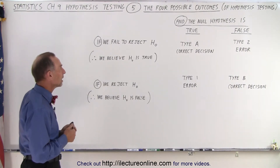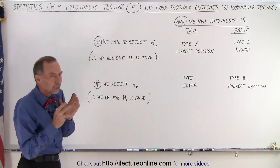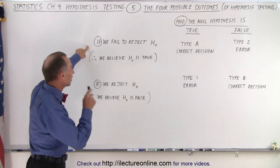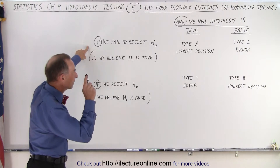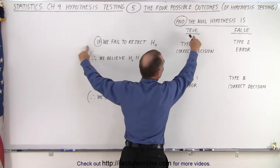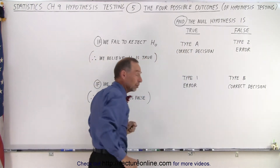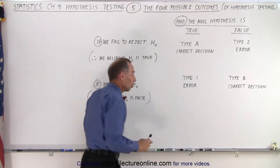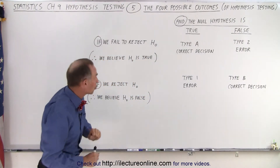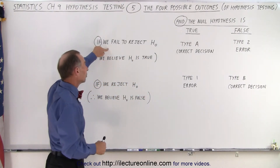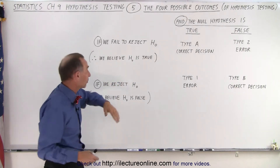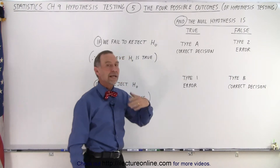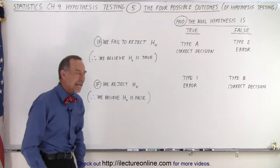But here we then tie that in with what's actually going on. If we fail to reject the null hypothesis, and the null hypothesis is true — it's a true statement — then we were correct. We call that a type A correct decision. So, the null hypothesis is true, and we fail to reject it, meaning we accept the null hypothesis, so we believe that the null hypothesis is true, and therefore, we make the correct decision.